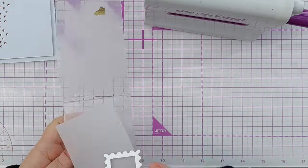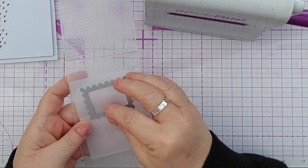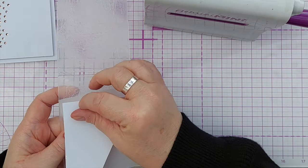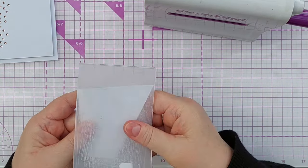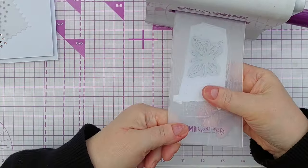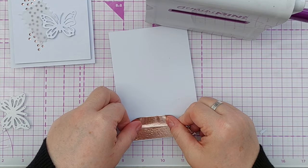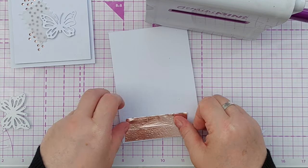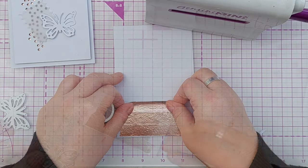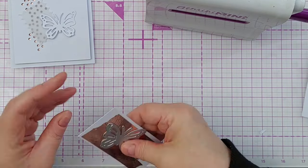Now I'm going to die cut all the elements that I want. So I've got a postage stamp here and I'm going to cut that from vellum so that it's see-through and I want one white butterfly and I want a rose gold butterfly. So I'm going to put some more washi tape on some cardstock and die cut my butterfly from that.